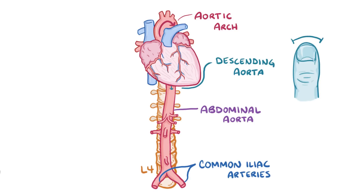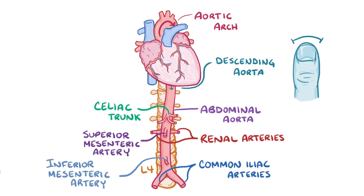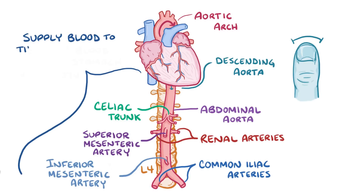Along the way, it gives rise to a number of paired arteries like the renal arteries, as well as three unpaired arteries: the celiac trunk, the superior mesenteric artery, and the inferior mesenteric artery, all of which come off of the anterior or front wall of the aorta and supply blood to the stomach and intestines.